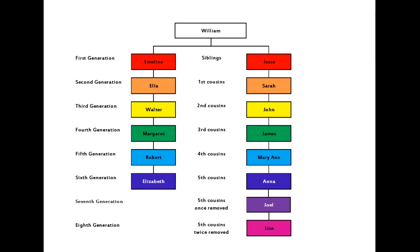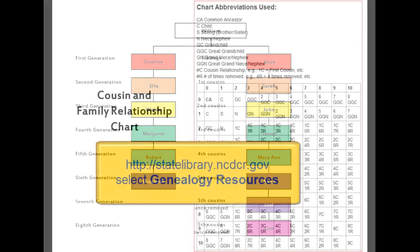Just count the generations from the common ancestor, and then the number of generations removed from the cousin relationship when one line adds generations but the other line stops. On the website of the North Carolina Government and Heritage Library, we have a chart that helps you quickly determine cousin and family relationships.